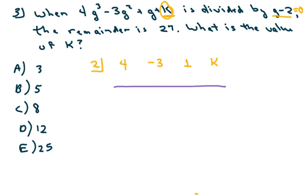Now, you set this up the way your teacher taught you. But this is how I do it. You bring down the 4. Then you multiply, and our remainder has to be what? 27. And recall that the remainder has to go here. So, you multiply and you get 8. You add. Negative 3 plus 8 is 5. And you multiply 2 times 5, and you get 10. And you add. And you get 11. 2 times 11 is 22. And so, when you're adding, K would have to be what? So, K would have to be 5.